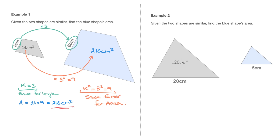Now, as mentioned at the beginning, the blue shape in example 1 was an enlargement of the gray shape. In example 2, the blue shape is a reduction of the gray shape. Once again, we're told: given the two shapes are similar, find the blue shape's area. We don't have enough information on the blue shape to calculate its area directly, but we do have the area of the gray shape, and we have the values of two corresponding side lengths.